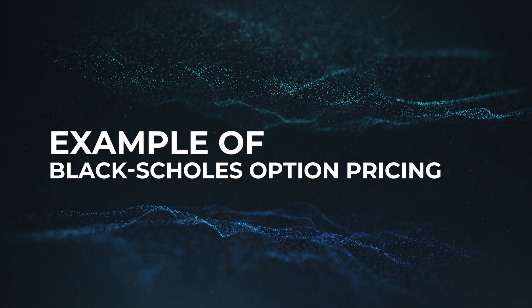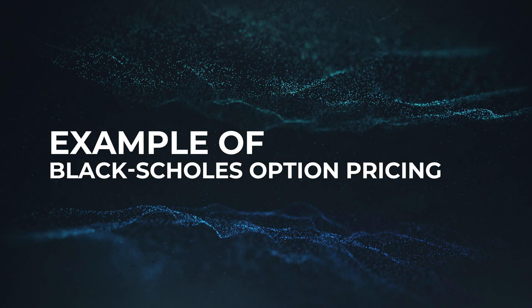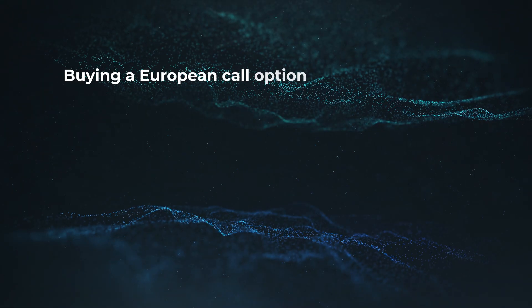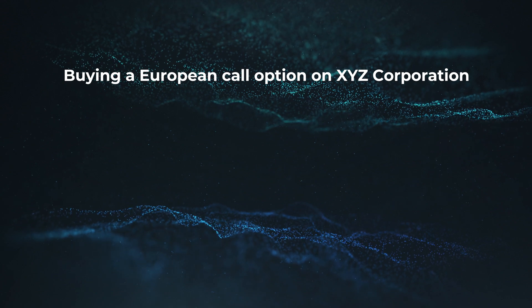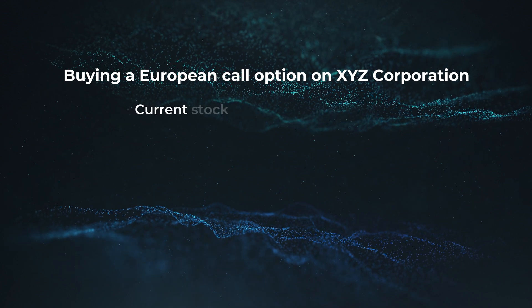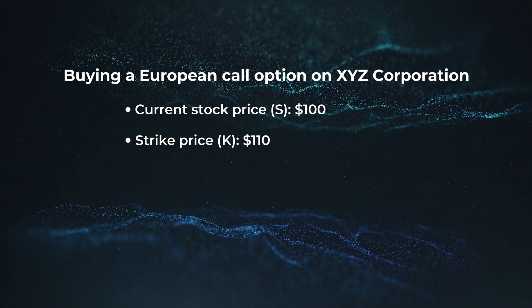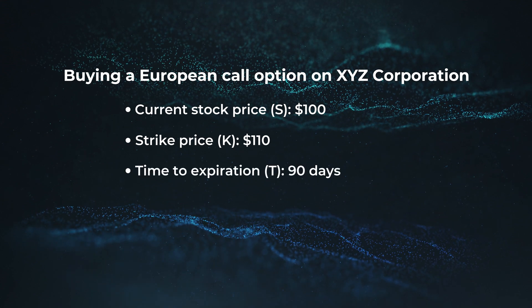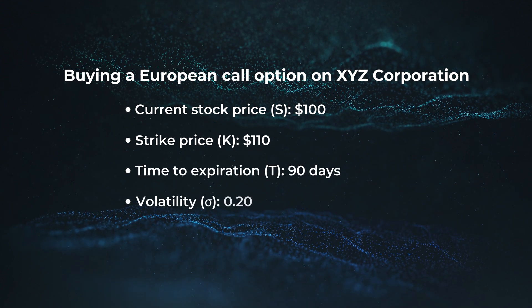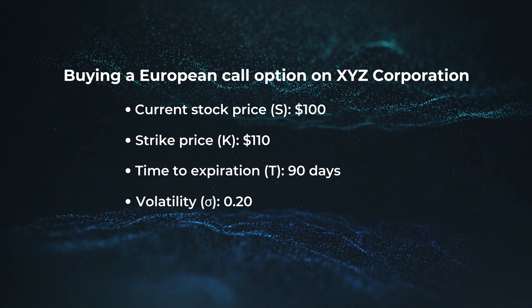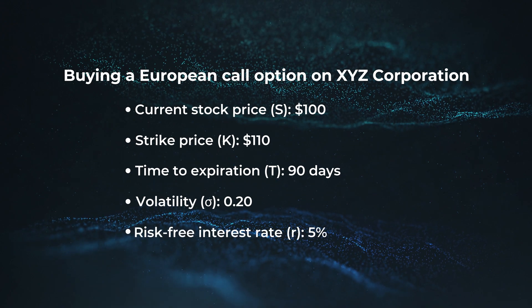Let's walk through a simplified example to illustrate the Black-Scholes model in action. Imagine you are considering buying a European call option on XYZ Corporation. The current stock price is $100, the strike price is $110, the time to expiration is 90 days, the volatility is 0.2 or 20%, and the risk-free interest rate is 5%. Using the Black-Scholes model, you can calculate the theoretical value of this call option.